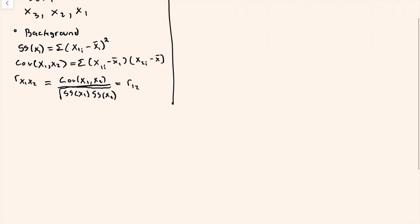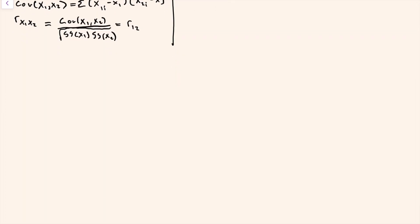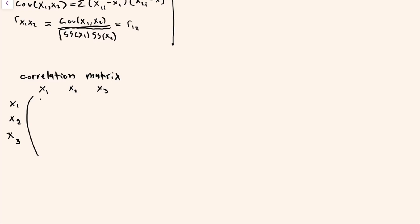Correlations are oftentimes compactly displayed in a correlation matrix. In the correlation matrix, the diagonal elements would represent the correlation between a variable and itself — since a variable is perfectly linearly related to itself, those diagonal elements are always going to be positive one.